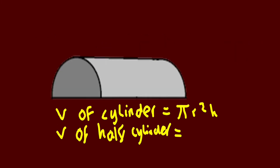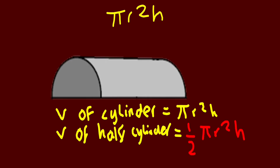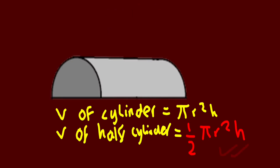So this is half of a cylinder. You already know that to find the volume of a full cylinder, you need to do pi r squared times h. However, to find half a cylinder, you do the same but just divide it by 2.